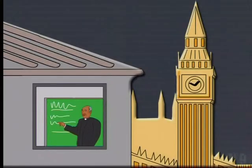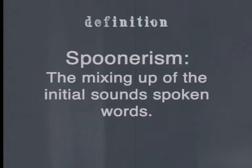Now let's look at another quirky aspect of the English language. Not only is this name amusing, but the application of it also usually leads to laughter. Spoonerism is named after the Reverend William Archibald Spooner, who was born in London in 1844. He became quite famous for his tongue getting tangled, and that is why the term bears his name. A Spoonerism is the mixing up of the initial sounds of spoken words. Now let's look at one of Reverend Spooner's most famous Spoonerisms.